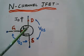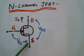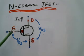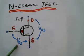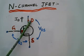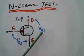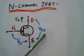The current flowing in the drain terminal is called ID, drain current. This is the gate terminal and this is the source terminal. Voltage between gate and source is called VGS. It is always reverse biased. The voltage between drain and source is called VDS.